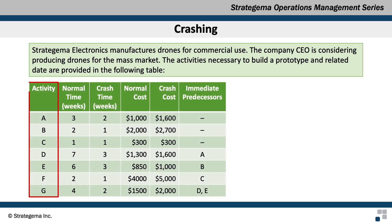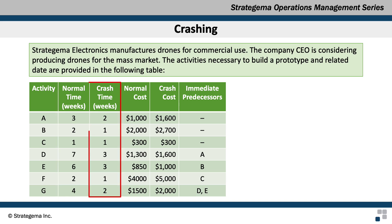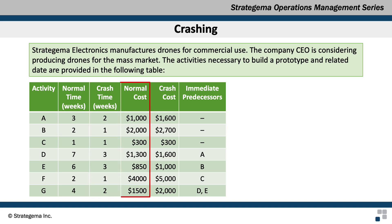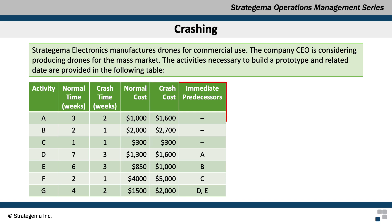Here we have seven activities A through G, their normal completion time in weeks, the crash time — which means the minimum time within which the activity can be completed — the normal cost associated with the normal time, and the crash cost which is the cost after crashing the activities. We are also provided with the immediate predecessors so we can determine all of the paths to completion.